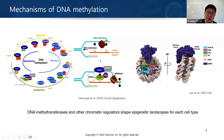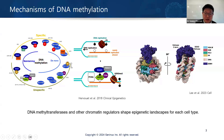Recently, the DNMT1 interaction with other chromatin remodeling proteins was published, included in the chromatin remodeling protein and DNA interactions published last year. The conclusion is that DNA methylation and chromatin remodeling shape the epigenetic landscape for each cell type.